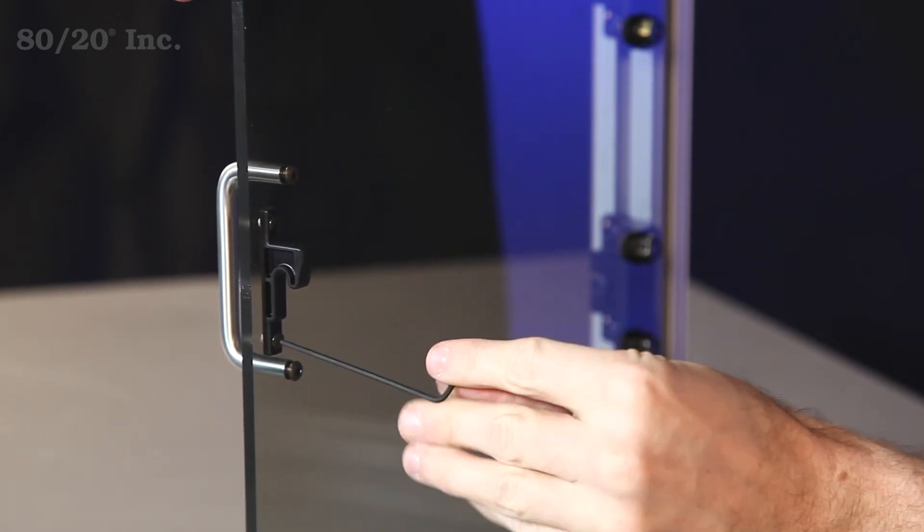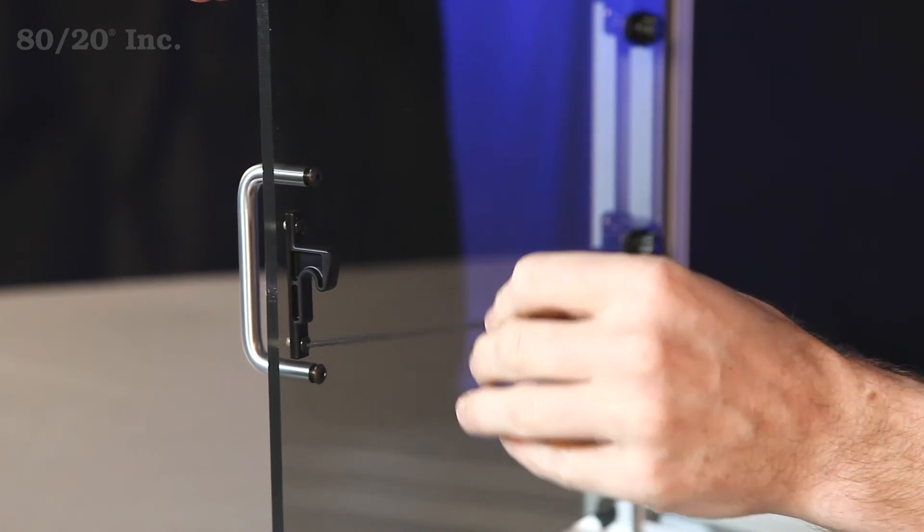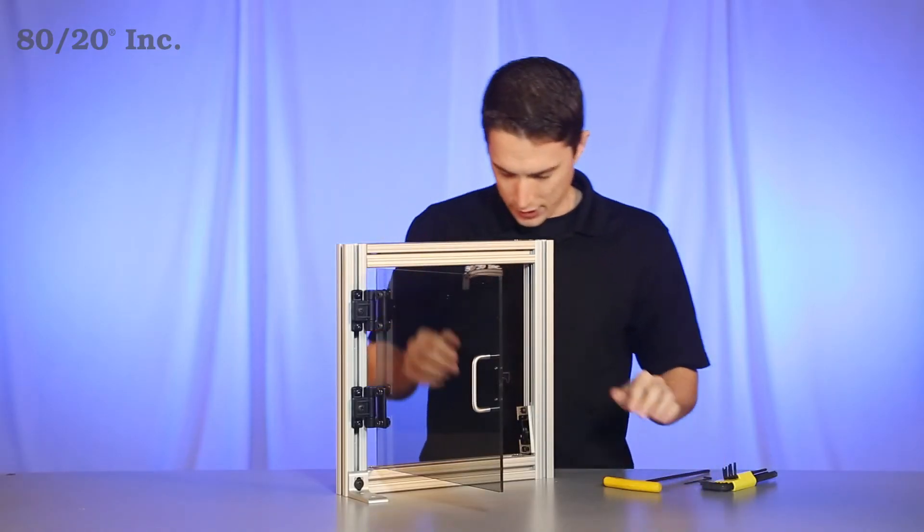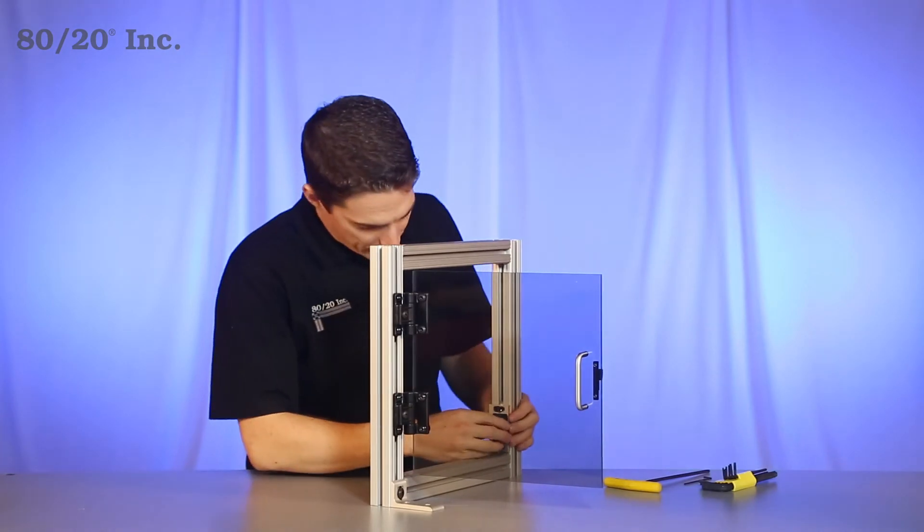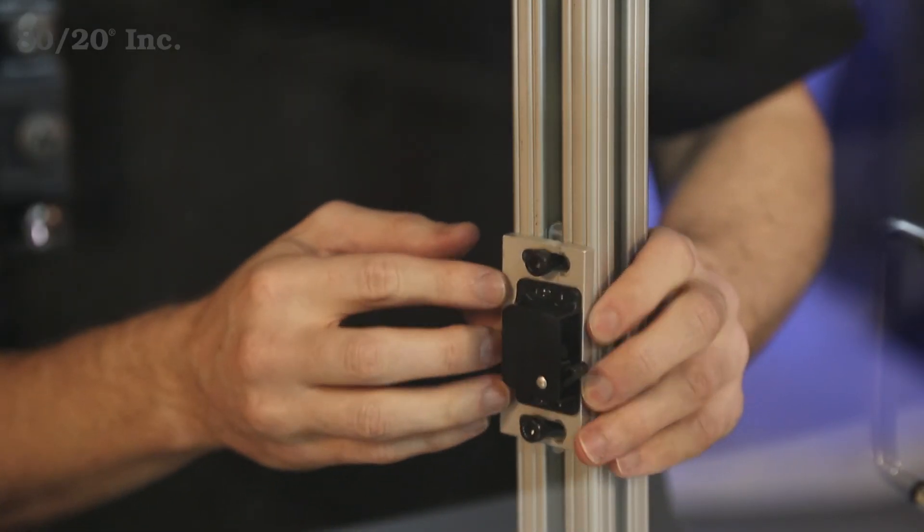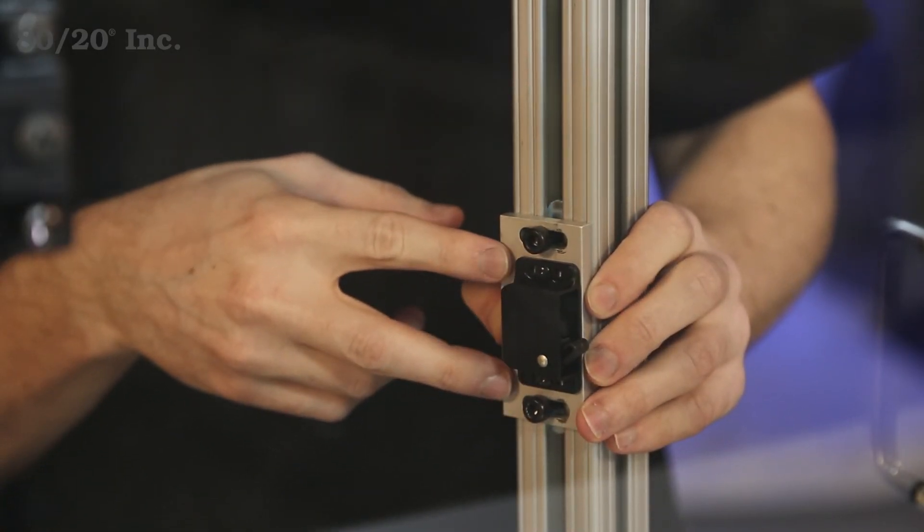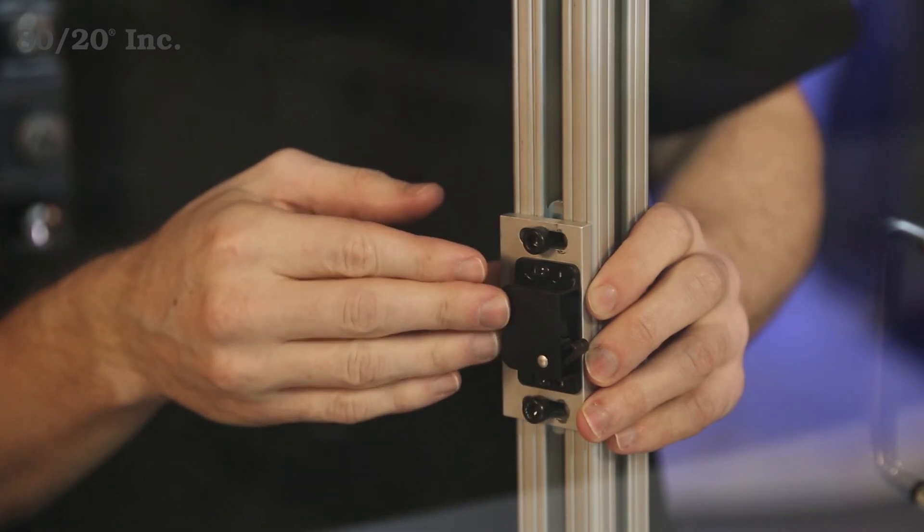Now once you have that secured into place, we'll go ahead and move on to the catch and the plate itself. Now the catch and the plate are already installed together on this. They install the same way the latch did. You take two bolts and just bolt down the catch right onto the plate.